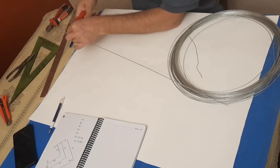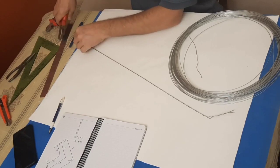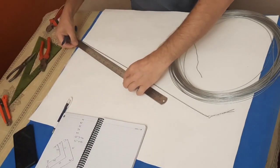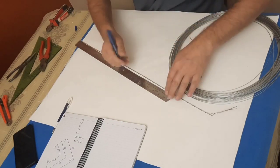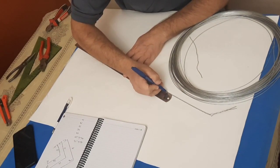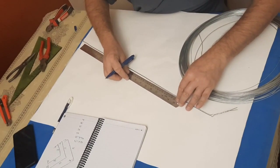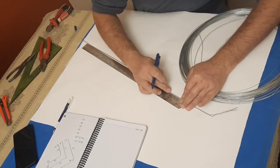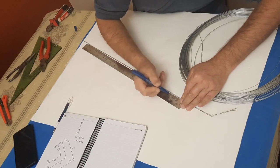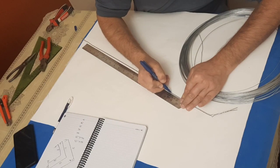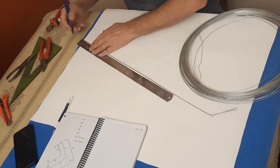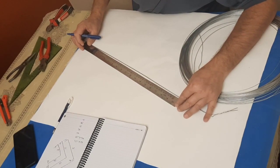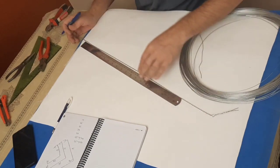So we start with the first one. I cut this part - it's 54. Mark 3 centimeters here, 3 centimeters on this side, and the middle is 48, which is 24 on each side.